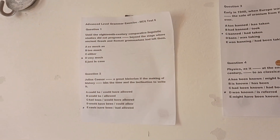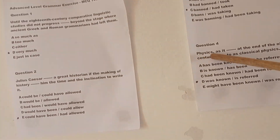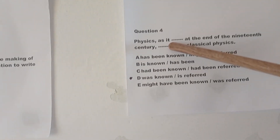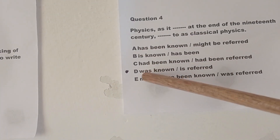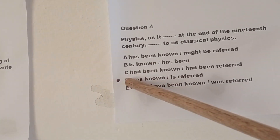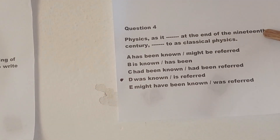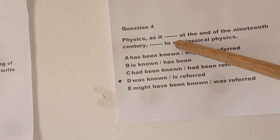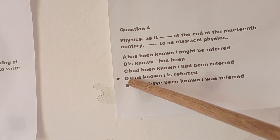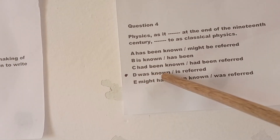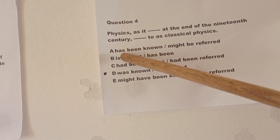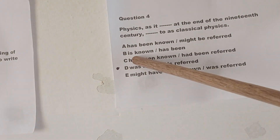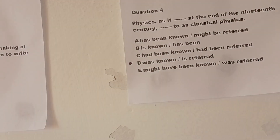Physics, as it was known at the end of the 19th century, is referred to as classical physics. The answer is D. Not A, not B, not C, not E.